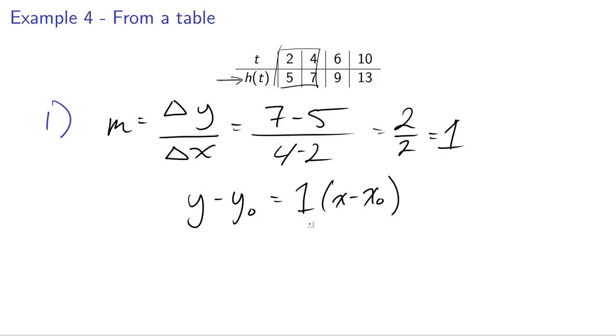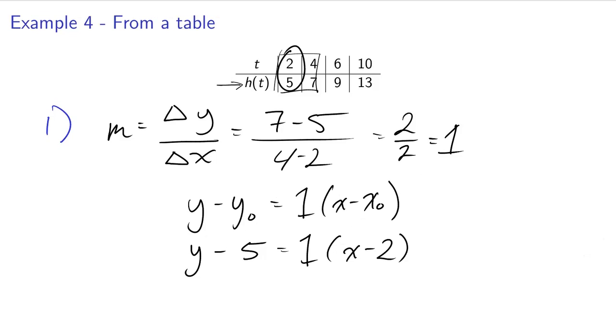From here, we're in a similar situation to last time. Instead of m, we can do 1. How do we pick our point that's on the line? This table actually gives us four points on the line. We can pick any one of them. We'll have y - 5 = 1 times (x - 2).